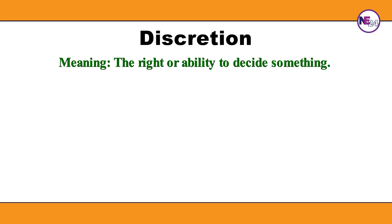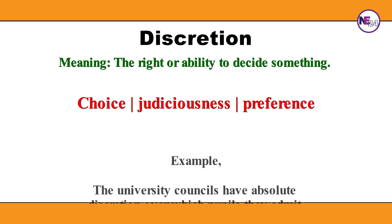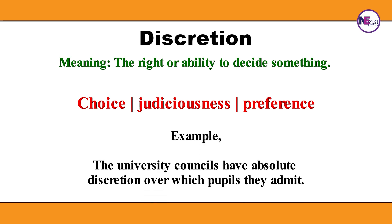Discretion. The right or ability to decide something. Synonyms: Judiciousness, Preference. Example: The university councils have absolute discretion over which pupils they admit.